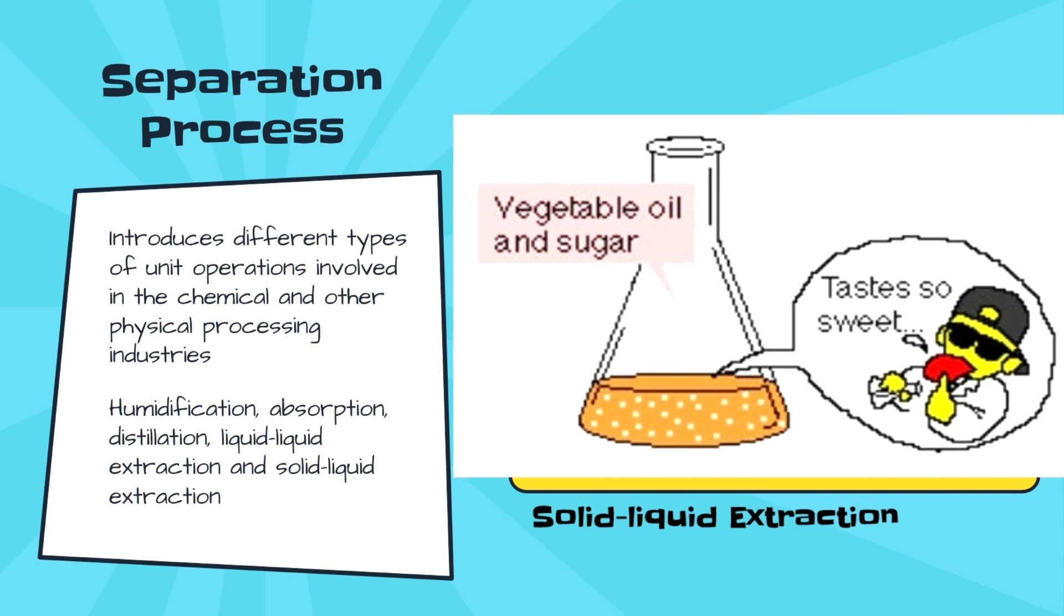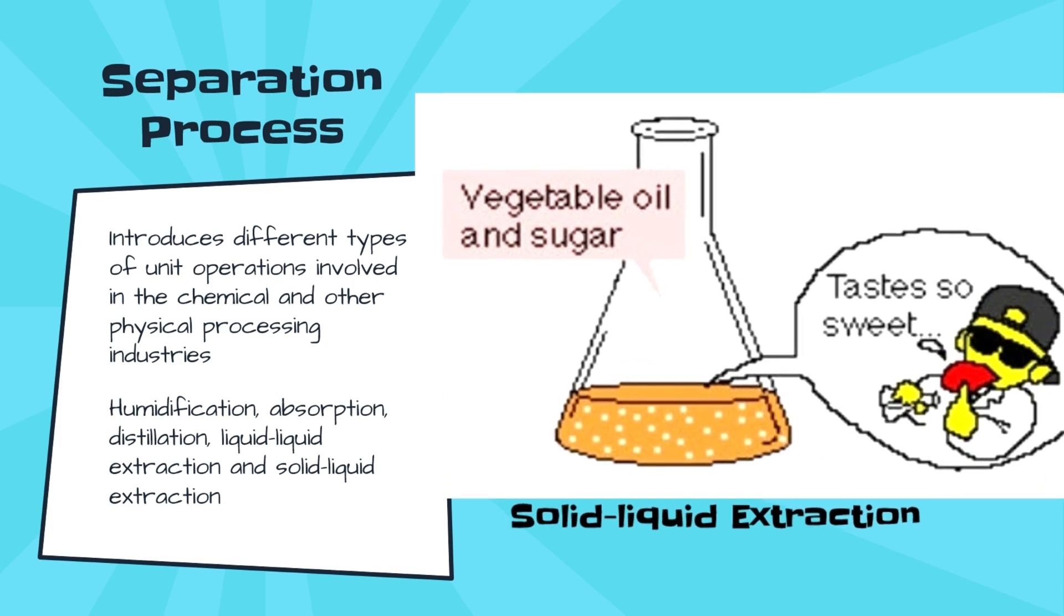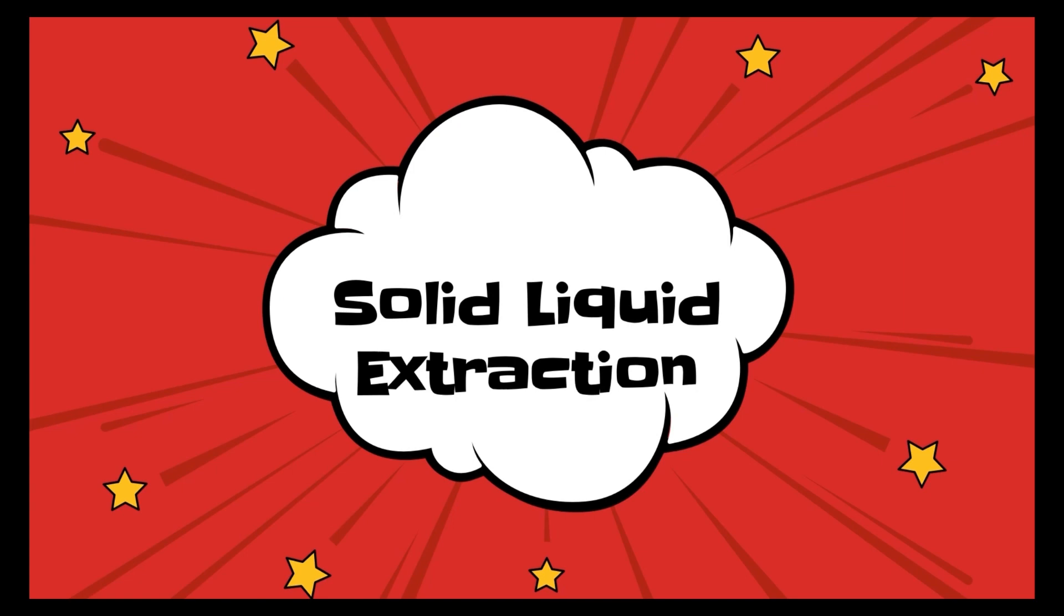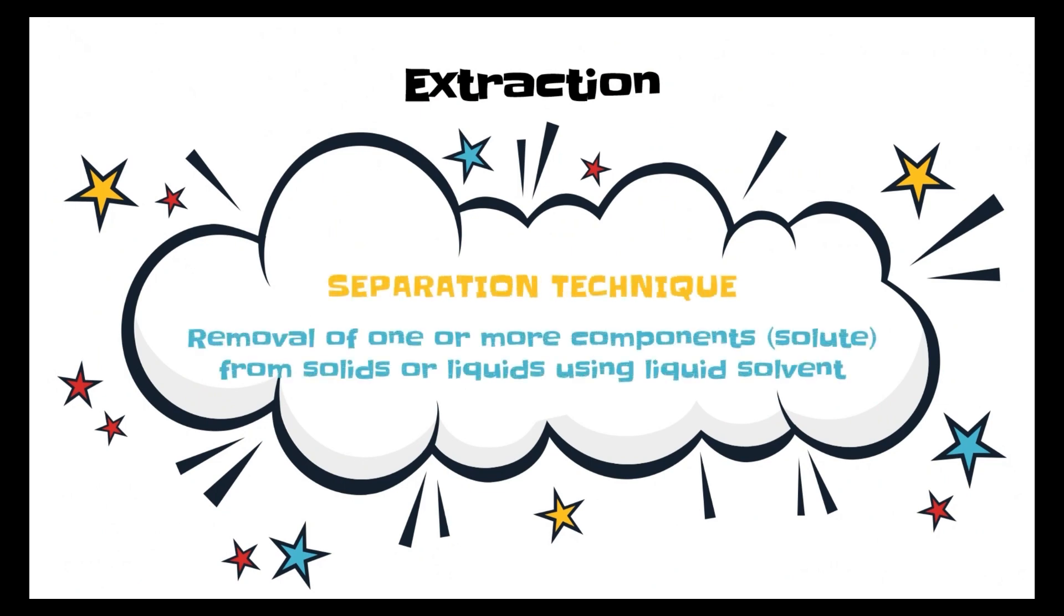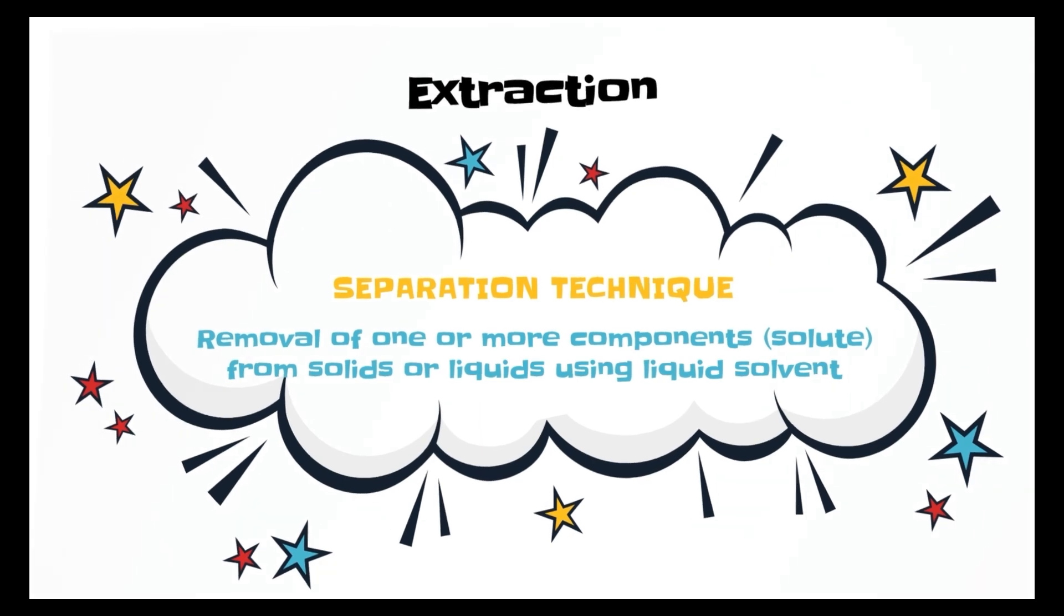Now we will discuss about the process of solid-liquid extraction. Solid-liquid extraction, also called leaching or extraction, is a crucial step in most chemical analysis. It is a separation technique which involves the removal of one or more components from solid or liquid using liquid solvent.